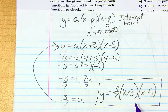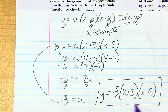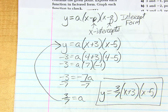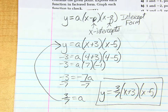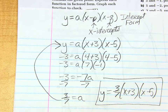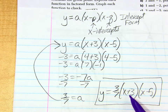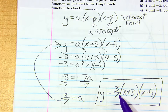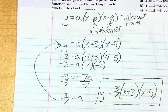This is intercept form. If you are asked to give your answer in standard form, you just FOIL these two binomials together and then multiply by 3/7. If I don't specify the form, leave it in intercept form. If I say give the equation in standard form, then FOIL first and multiply by 3/7. I would FOIL first because I don't want to deal with the fraction until the end.